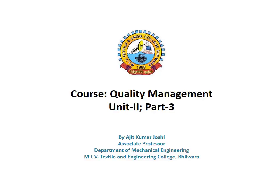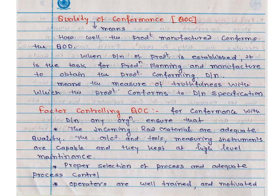Dear friends, in the previous session we discussed the quality of design. Now we start the quality of conformance. That means, during manufacturing, we make the product as per the designer's design — how well the product manufacturer confirms the quality of design.